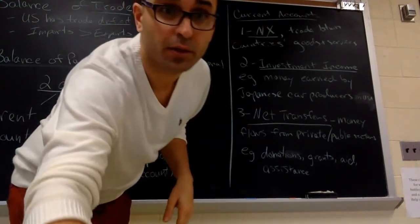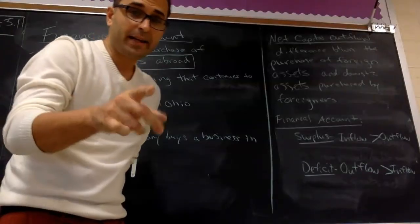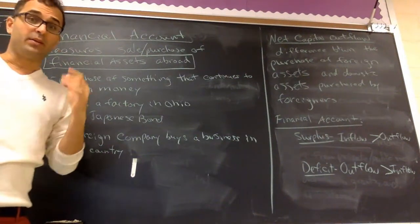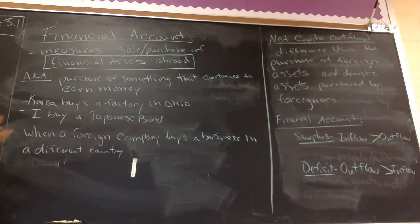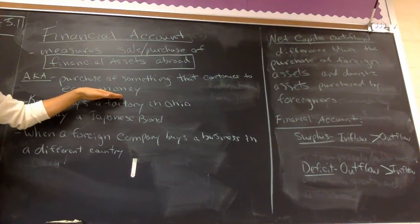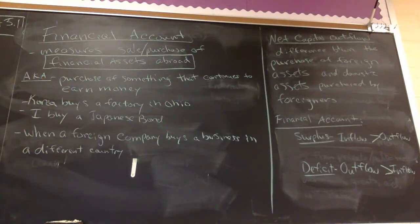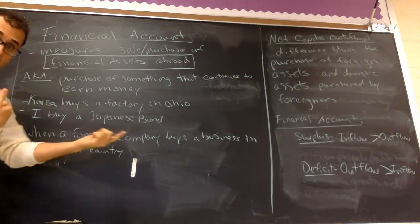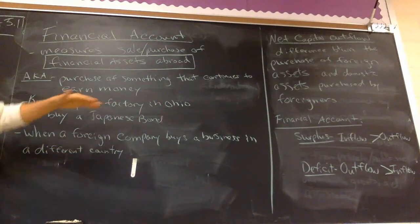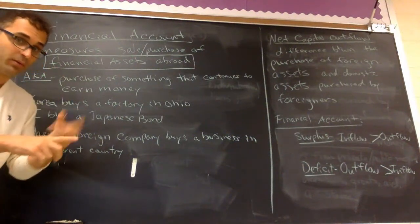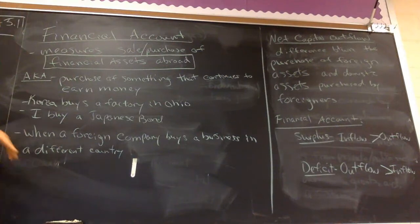Please take some notes. The financial account measures the sale and purchase of financial assets abroad. Think: what are financial assets? If you purchase something that continues to earn money, that's what an asset is — like a bond or a business. For example, Korea buys a factory in Ohio. If you buy a good, current account. If you buy a factory — someone else's business — capital or financial account. I buy a Japanese bond: financial account. When a foreign company buys a business in a different country: financial account.